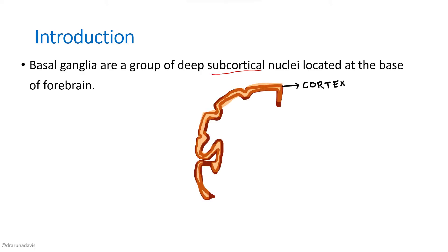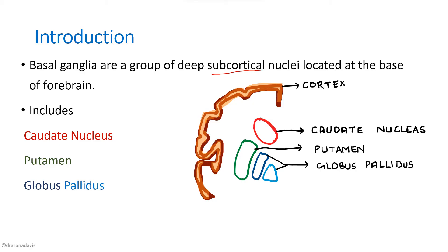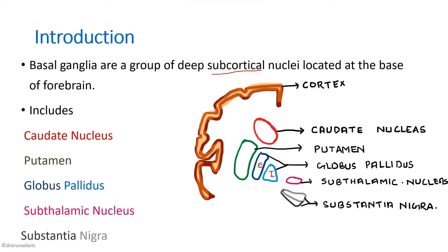It is present in the subcortical region behind the cortex and it mainly includes the caudate nucleus, the putamen, the globus pallidus — globus pallidus externus as well as globus pallidus internus — and we have got the subthalamic nucleus and then substantia nigra. In the substantia nigra also we have got a pars compacta and a pars reticulata. So these are roughly the parts or the constituents of the basal ganglia.